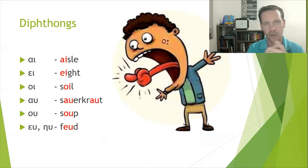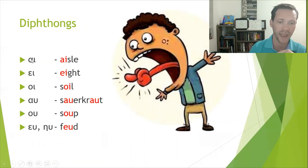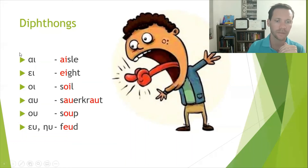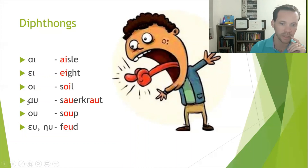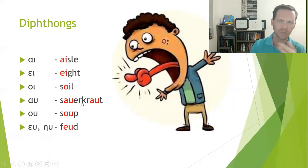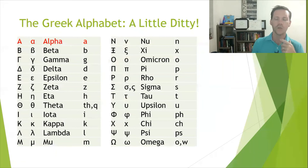The last couple things to cover are diphthongs. A diphthong is anytime you have two specific vowels put together that make a combined sound. They are diphthongs ending in iota or upsilon: alpha+iota makes an 'I' sound as in 'aisle' — hence 'kai'; epsilon+iota says 'A' as in 'eight'; omicron+iota says 'oi' as in 'soil'; alpha+upsilon says 'ao' as in 'sauerkraut'; omicron+upsilon says 'oo' as in 'soup'; and epsilon+upsilon or eta+upsilon says 'u' as in 'feud.'